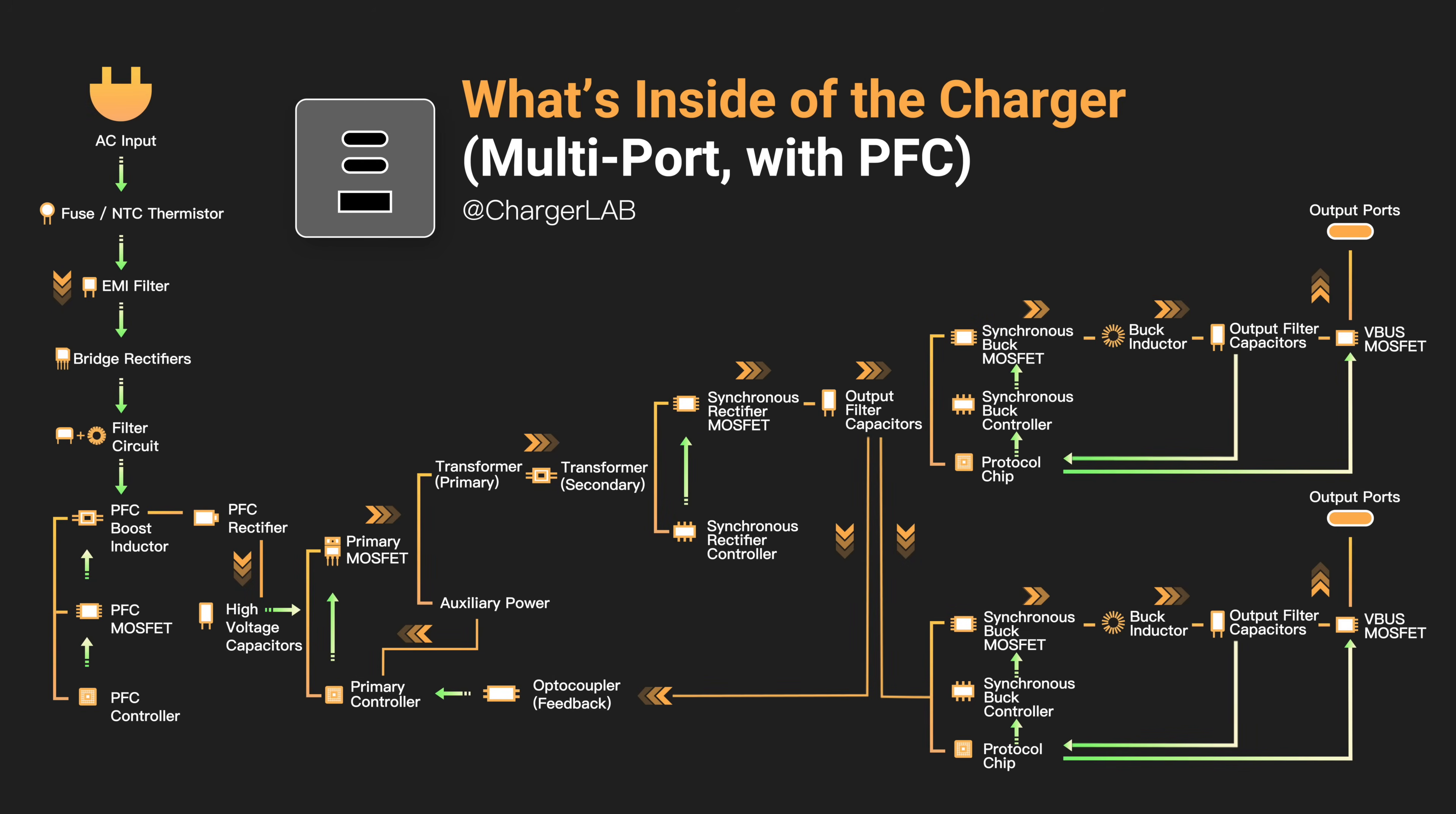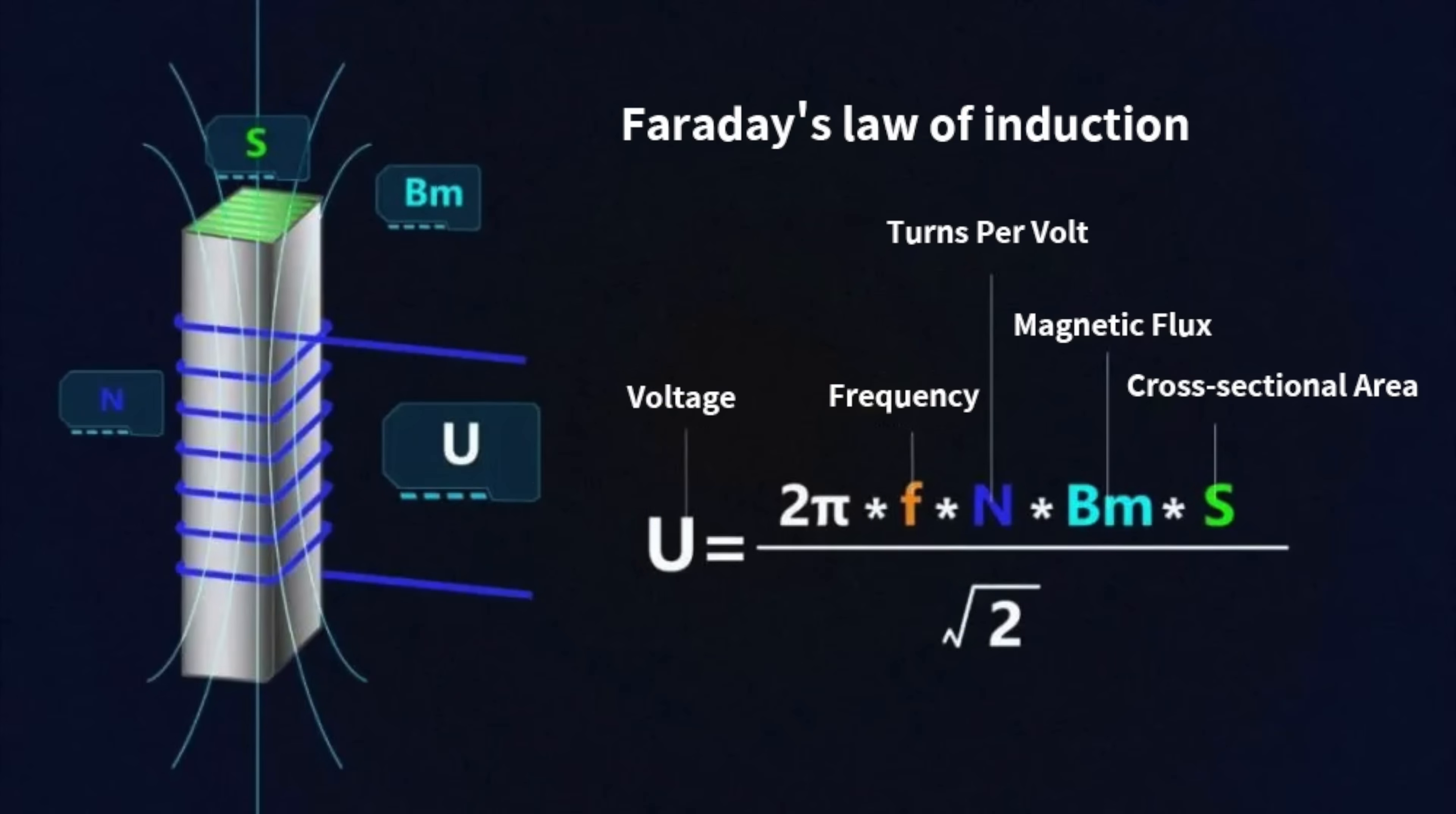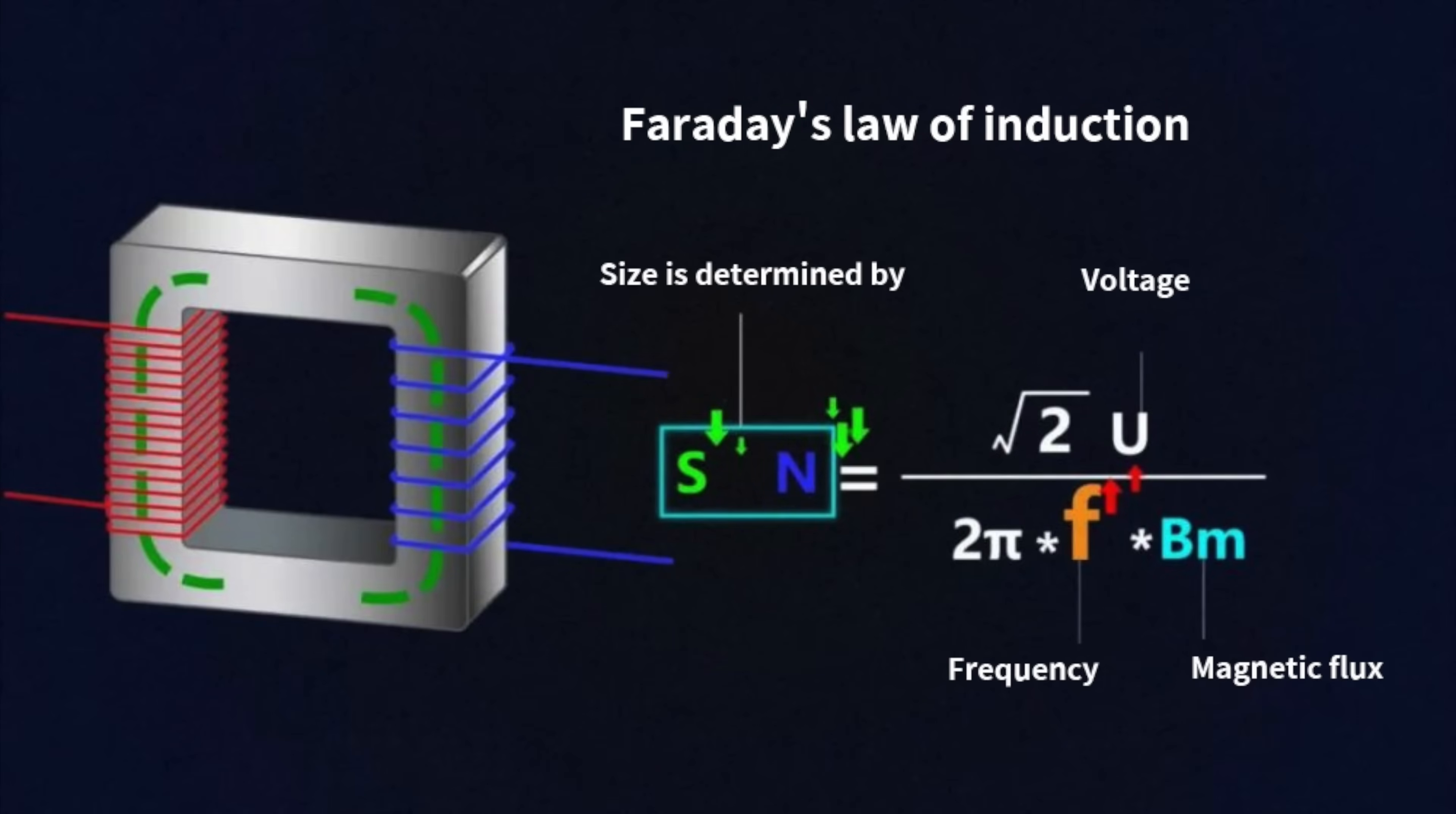First, we need to understand how the charger works. In most cases, the transformer is the largest component in the charger. When the upper power is fixed, its size is directly related to the frequency of the polarized current, that's f. When the voltage U remains unchanged, if we want to reduce the size, that is reduce the cross-section area S, the best way is to increase the frequency f.